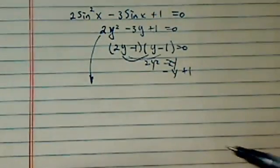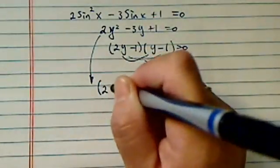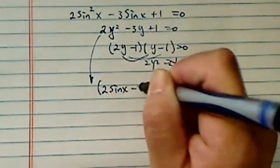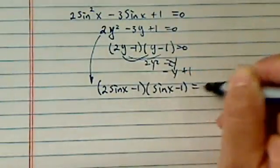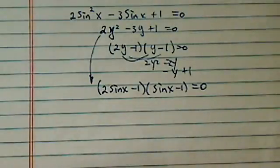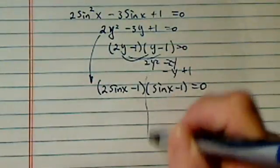Substituting our sine x back in there, so I have 2 of sine x minus 1 times sine of x minus 1 equal to 0. So having arrived here, we're going to split them up, solving each one separately.